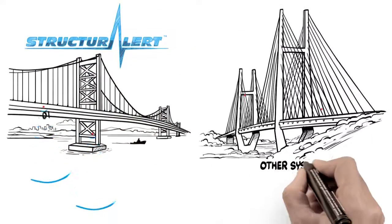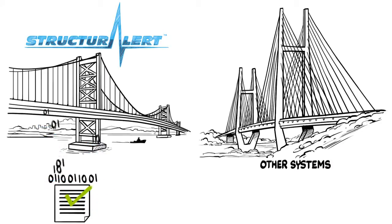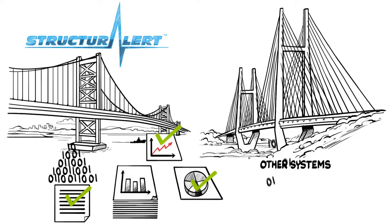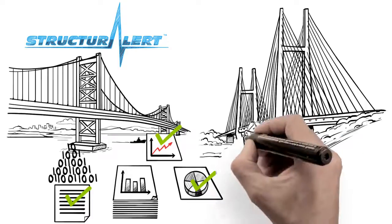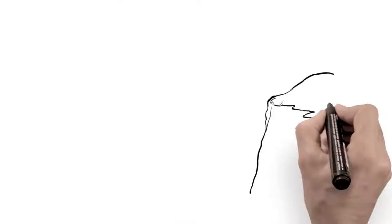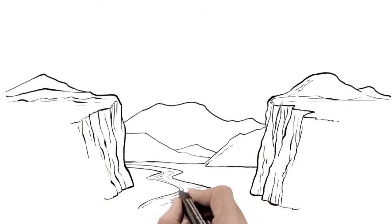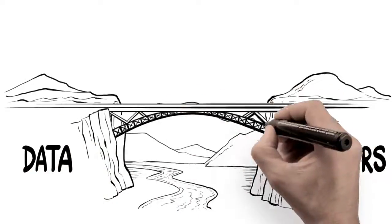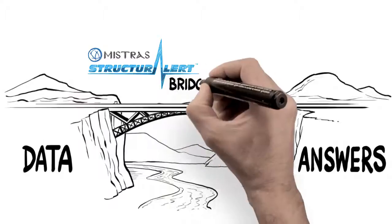It monitors and acquires valuable data that provide the insight and the answers you need to operate safely. Unlike other systems that just produce reams of data requiring extensive engineering analysis, Mistross Technology bridges the gap between data and answers, thanks to the Structure Alert System's automated analysis capabilities.